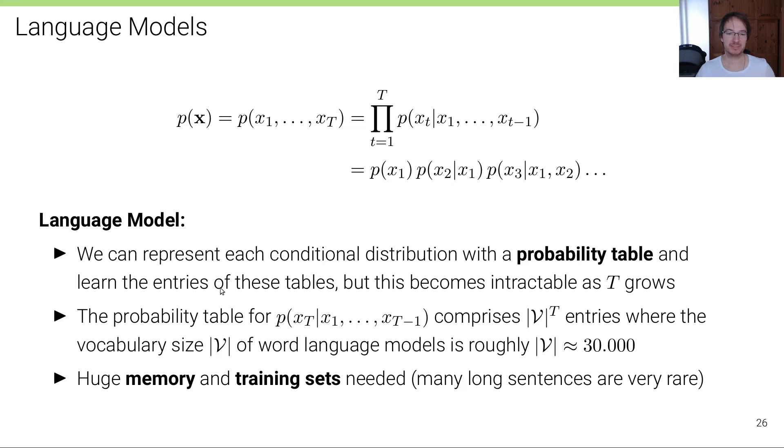Learning the entries of this table becomes intractable very quickly as the sequence length of such a naive language model grows. The probability table for p(xT|x1,...,xT-1) comprises |V|^T entries, where the vocabulary size |V| of word language models is roughly |V| = 30,000. Huge memory and training sets needed, since many long sentences are very rare.